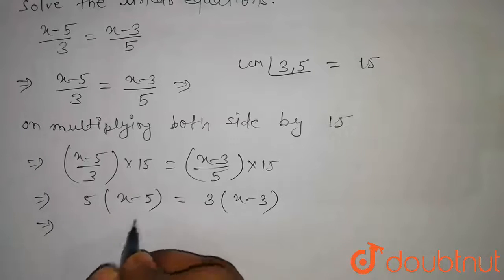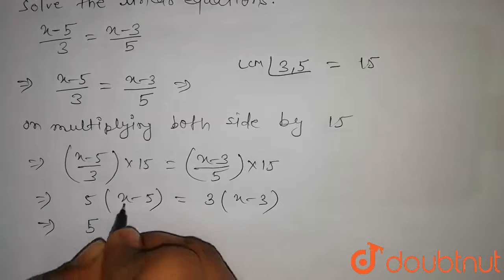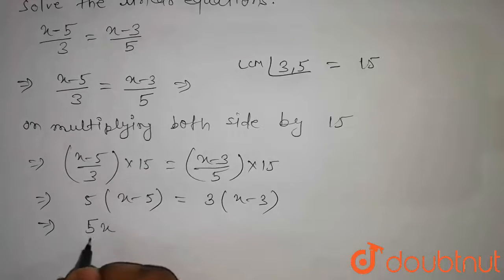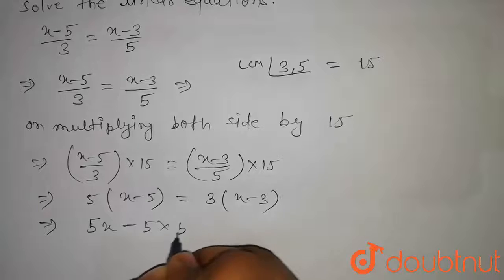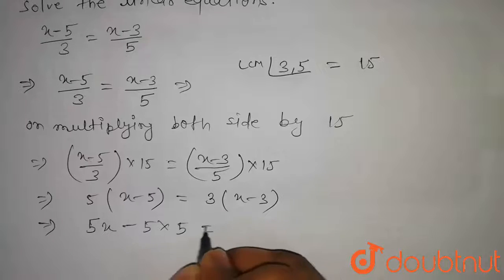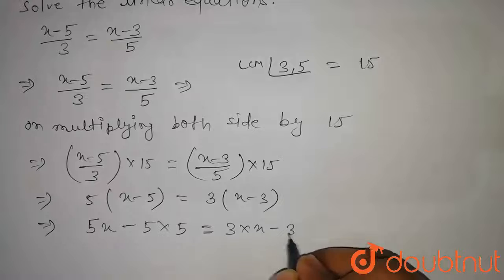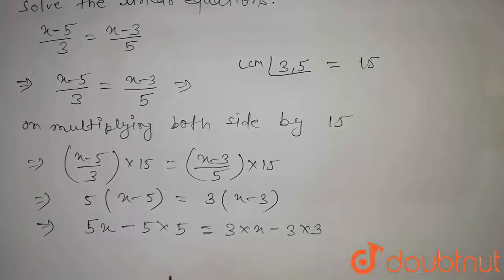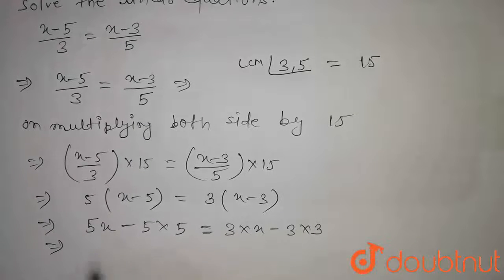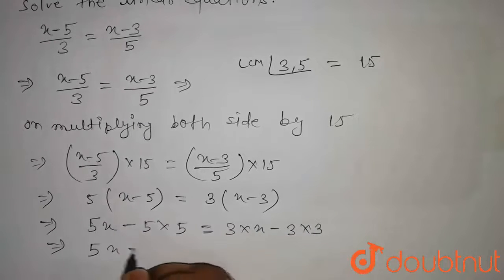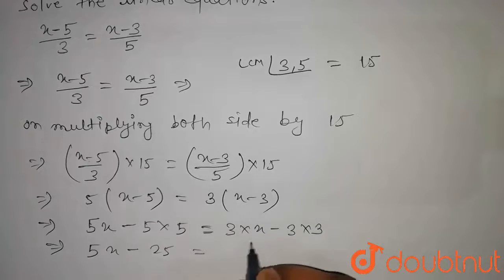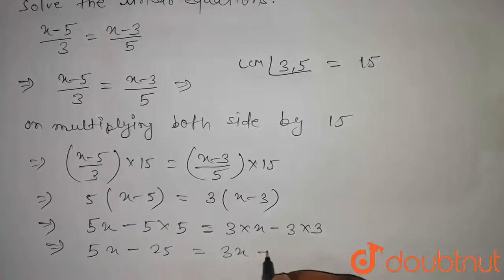Now we will open the bracket. Hence, this will be equal to 5 into x, that is 5x minus 5 into 5, and this will be equal to 3 into x minus 3 into 3. Hence we get 5x minus 25 equal to 3x minus 9.